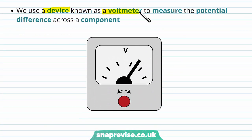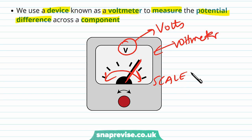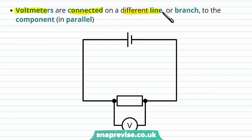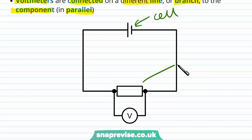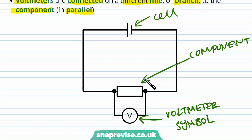We use a device known as a voltmeter to measure the potential difference across a component. It measures voltage in volts, and the dial gives the reading on its scale. Voltmeters are connected on a different branch to the component — they are connected in parallel. This is because the voltmeter measures the energy of the electrons before and after they pass through the component, allowing it to find the difference in their energy and determine how much work they had to do to pass through the component.